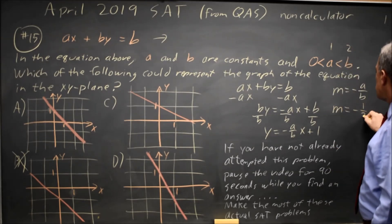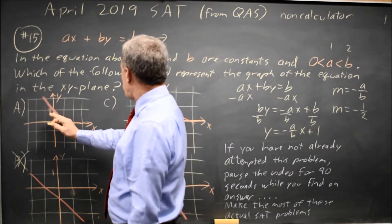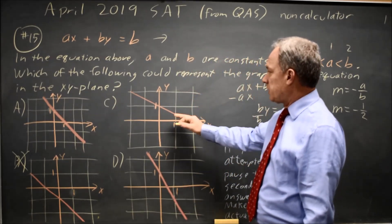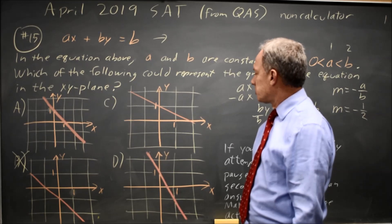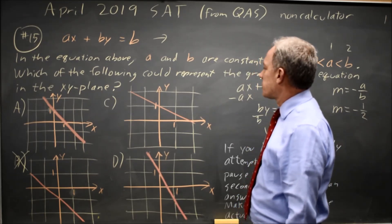m is negative 1 half. It is a shallow negative slope. Choice a is a slope of negative 1, choice d is a slope of negative 2, and choice c is a slope of something close to negative 1 half, which is what I found with the numbers I made up.